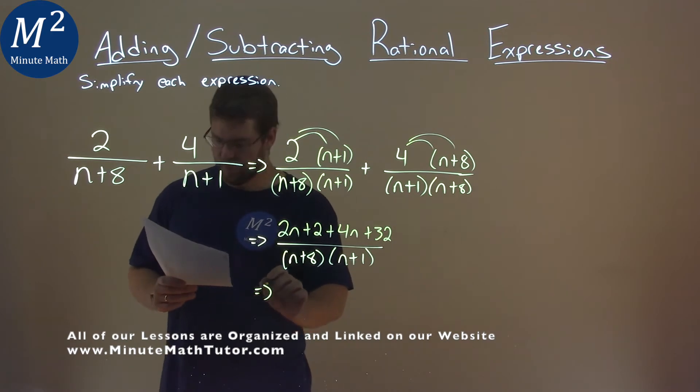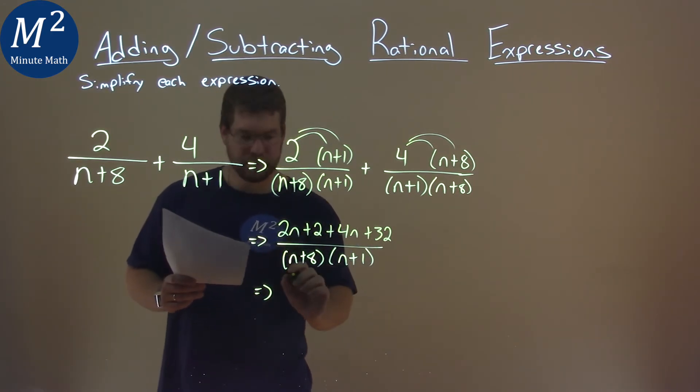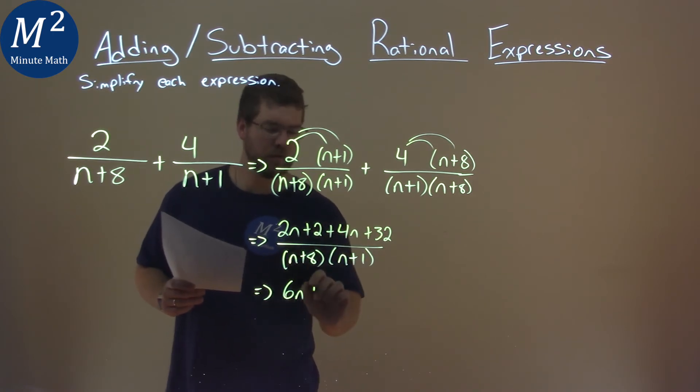From there, we want to combine our like terms in the numerator. So 2n and 4n is 6n adding together, and 2 and 32 is 34.